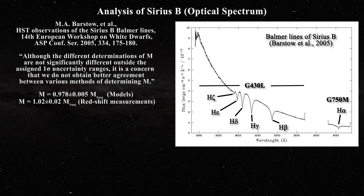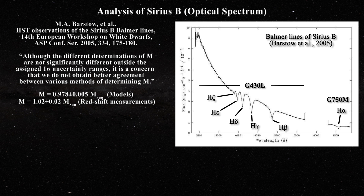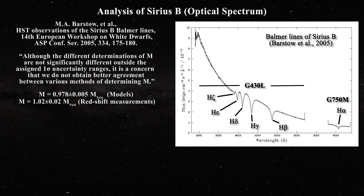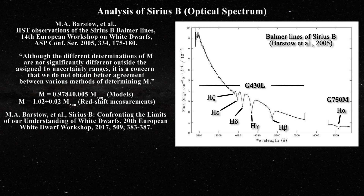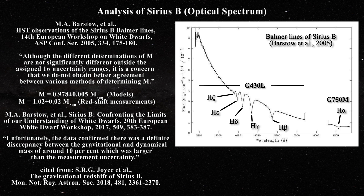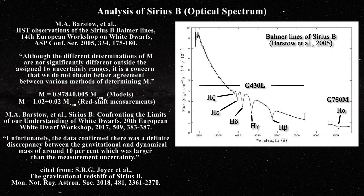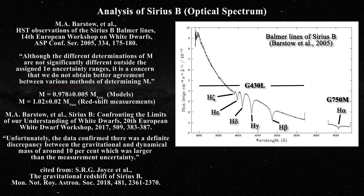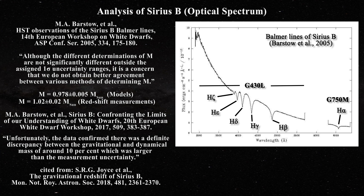The gravitational redshift of Sirius B would be measured again using Hubble by Barstow et al. in 2013, with the work reported at a conference in 2017. The results confirmed that there was a definite discrepancy between the gravitational and dynamic mass of about 10%, which was larger than the measurement uncertainty. This may be the closest any astrophysicist has come to understanding that their fictions do not match up with the facts.